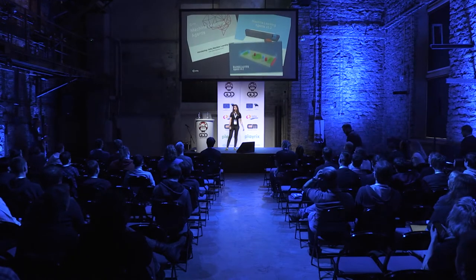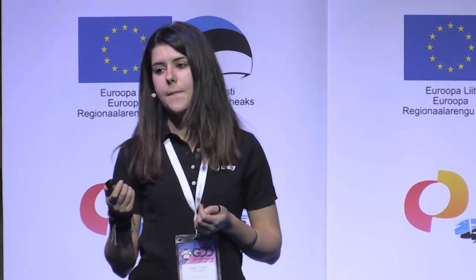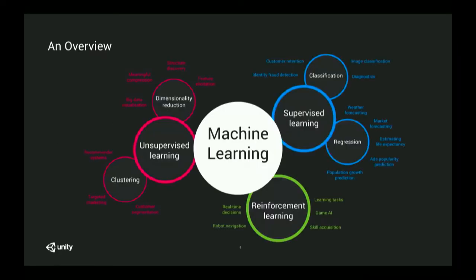There's been a lot of content about machine learning agents on the internet. We have the Unity blogs with tutorials and how-to guides, and there's also developer content on GitHub. In case you haven't heard of it, here's a quick introduction: machine learning is an application of artificial intelligence aimed at automating a system to do something without us having to tell it exactly how to do it.